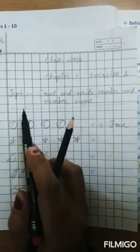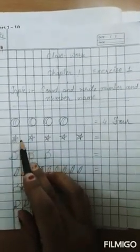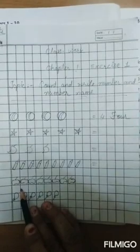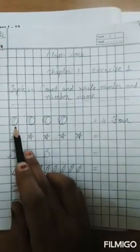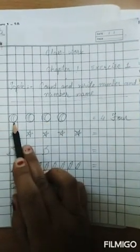Underline the topic with red pencil. Draw the picture this way and then count the pictures and write their number names, number and number names.